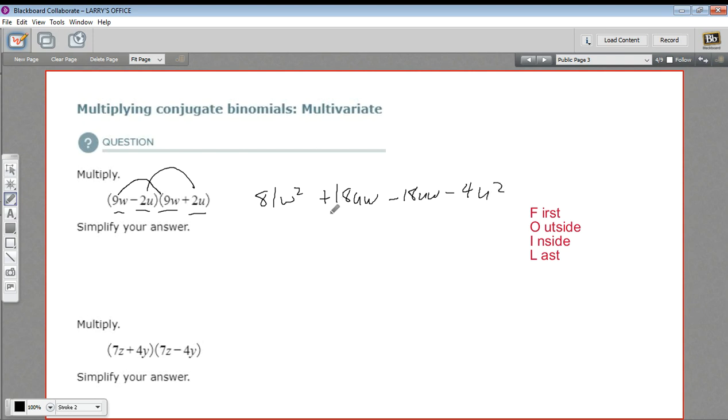Now, when we come to combine the like terms, this is where things get kind of interesting. We have a plus 18uw and a minus 18uw. So this adds up to 0, so we don't even need to write it. And this is what happens. This is part of the pattern of what happens with multiplying conjugate binomials. So we end up with a simpler answer here than you might have expected. 81w squared minus 4u squared. That's our answer.